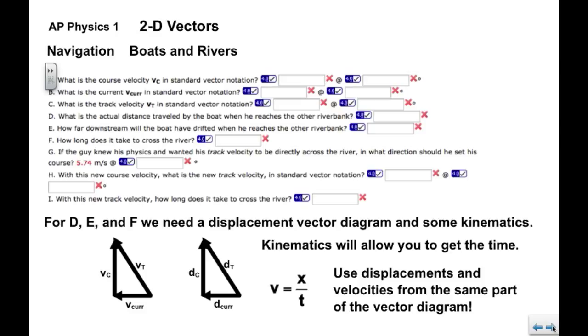You will need to use some kinematics to get the time. Again, we have a constant velocity, so we can use x equals v times t or v equals x over t. Rearrange it and solve for t. We would see that t equals x over v. But we have to make sure that we use displacements and velocities from the same part of the vector diagram. What I mean by that is these are similar triangles.